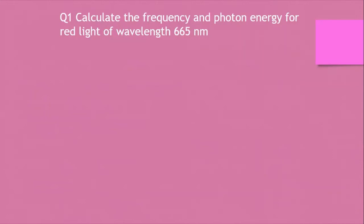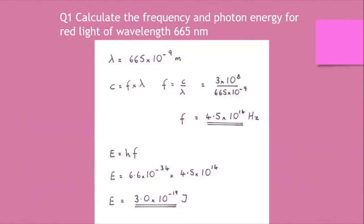Let's look at some further past exam questions. Calculate the frequency and photon energy for red light of wavelength 665 nanometers (10⁻⁹ m). You might want to pause and try the calculation — make sure you put down your thinking and show your workings with units. F equals C over lambda gives us 4.5 × 10¹⁴ Hz. Photon energy equals HF, and we get approximately 3 × 10⁻¹⁹ joules.